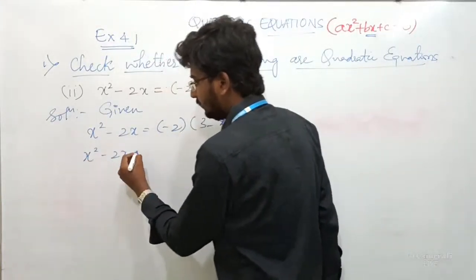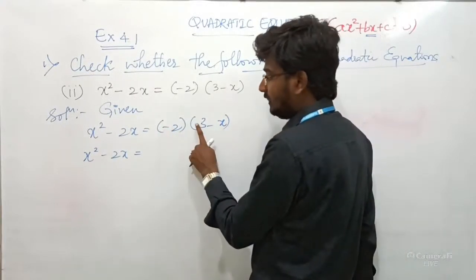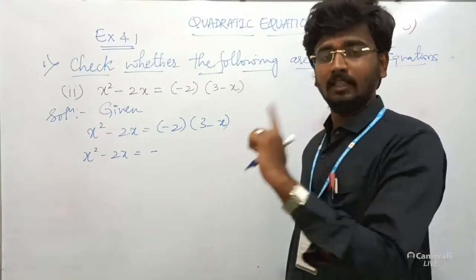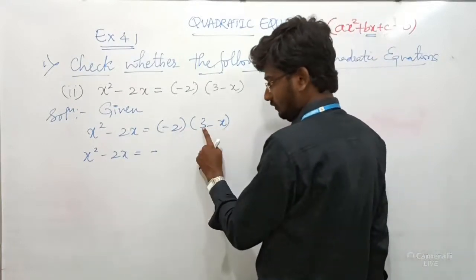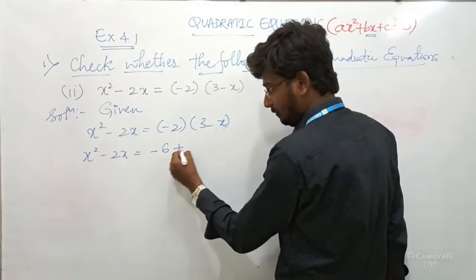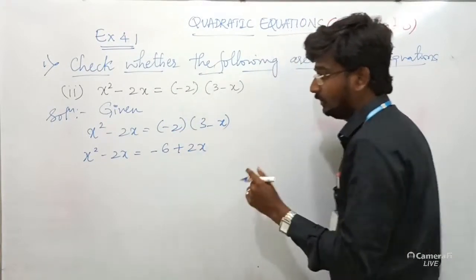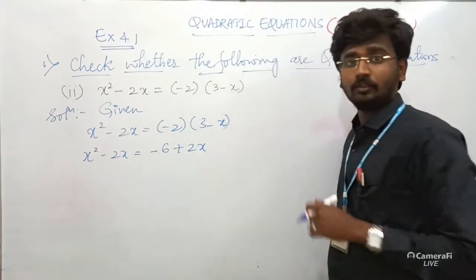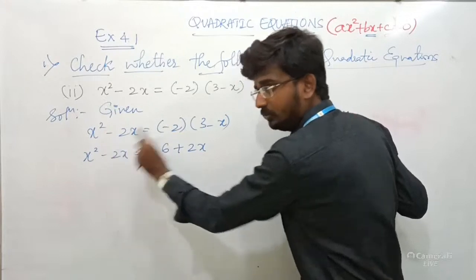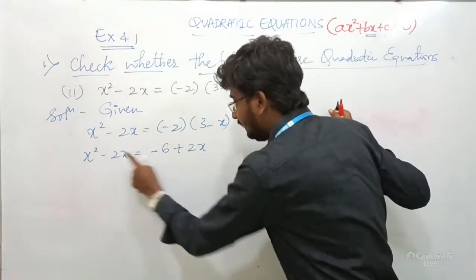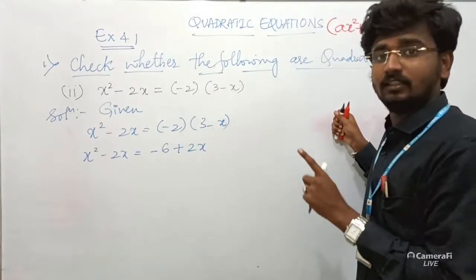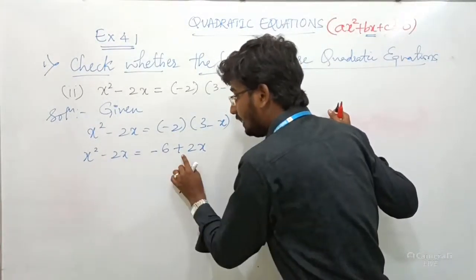X² − 2X = ... now multiply the bracket term. Minus into plus is minus: −2 × 3 = −6; minus into minus is plus: −2 × (−X) = +2X. So X² − 2X = −6 + 2X. Do not cancel −2X and +2X because their signs are different — you can only cancel LHS and RHS terms if they have the same sign.